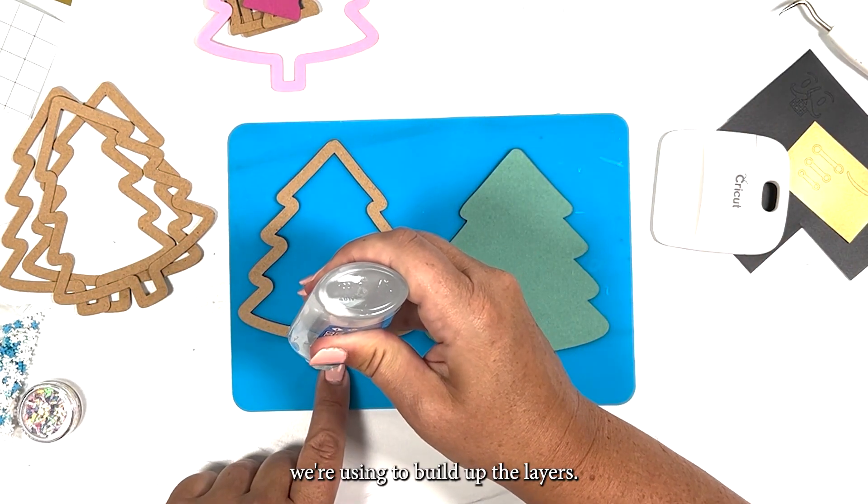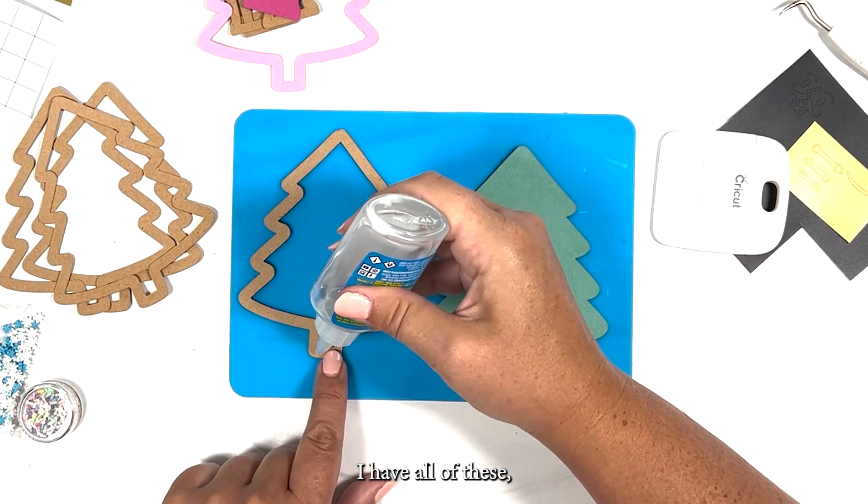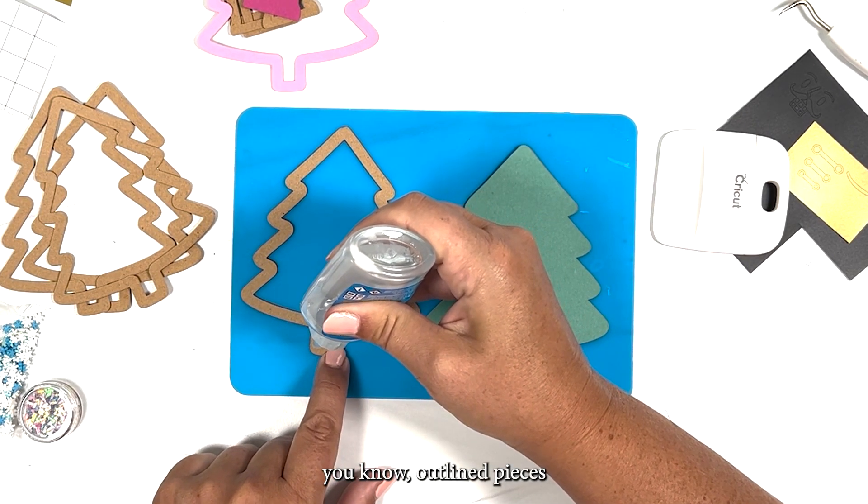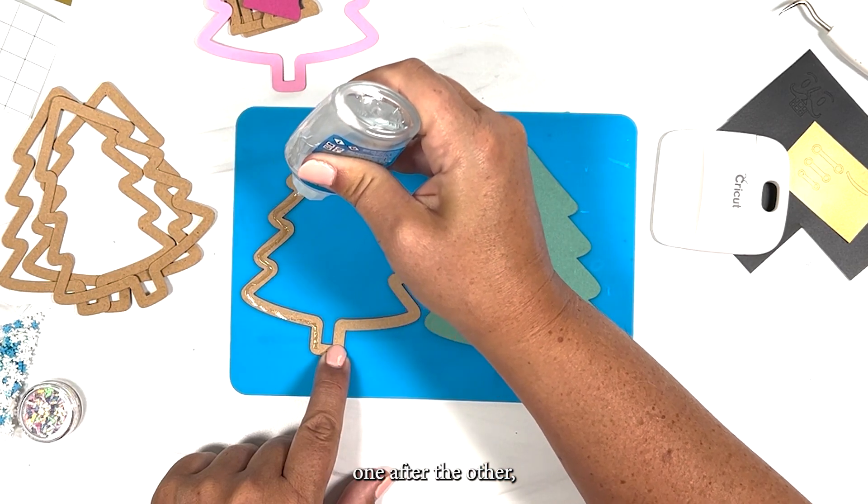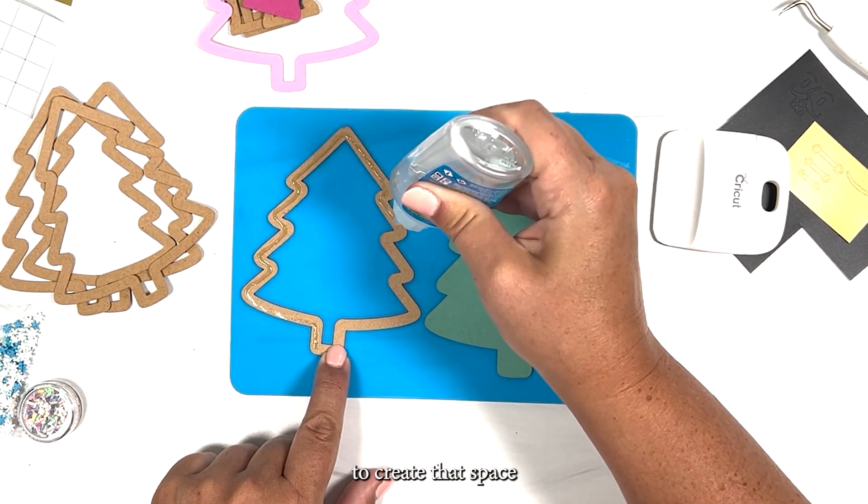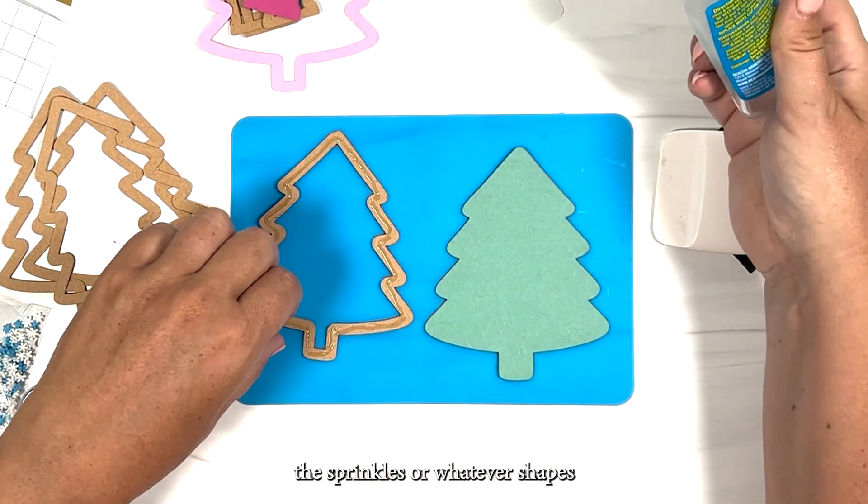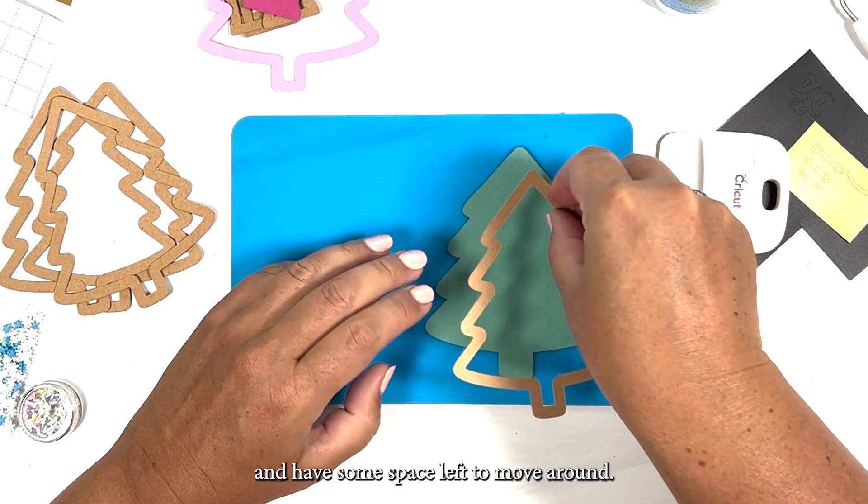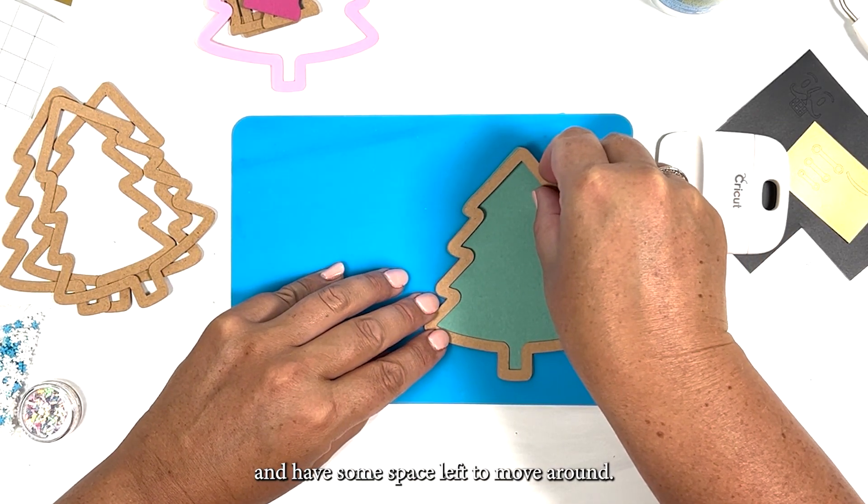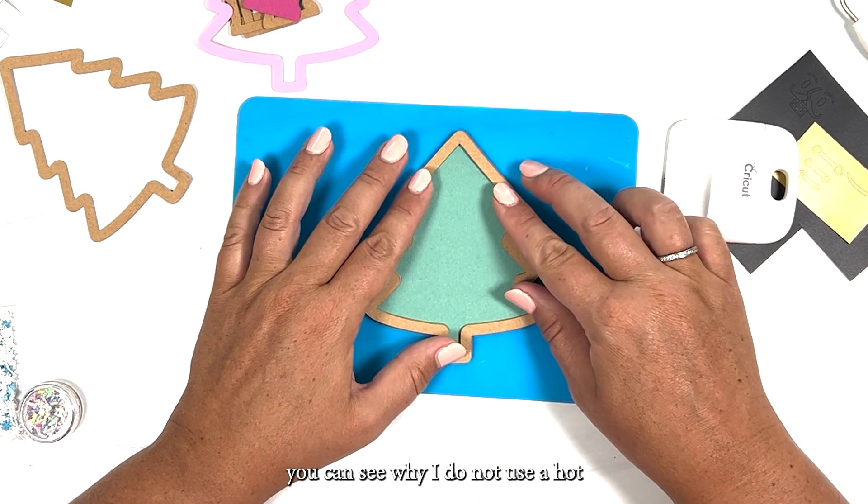Craft board is also what we're using to build up the layers. So if you notice, I have all of these outlined pieces. We're going to use those and stack them right on top of each other one after the other to create that space in the middle of the ornament so that way the sprinkles or whatever shapes you want to use, they fill that space and have some space left to move around. And now that I'm doing this you can see why I do not use a hot glue gun.